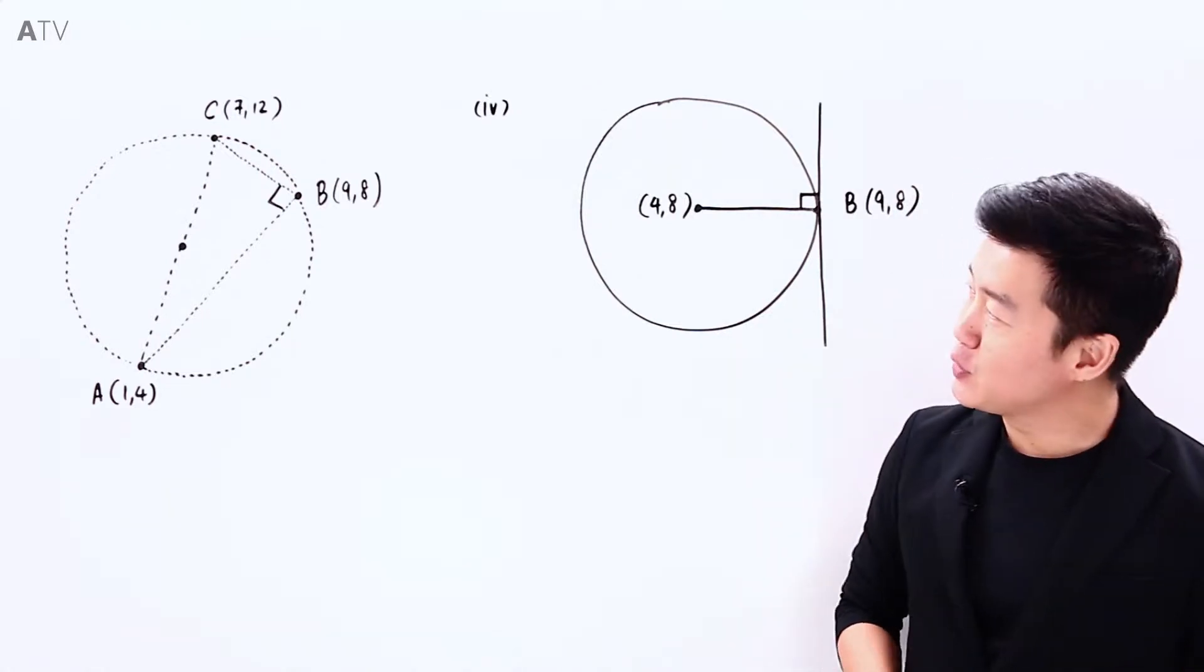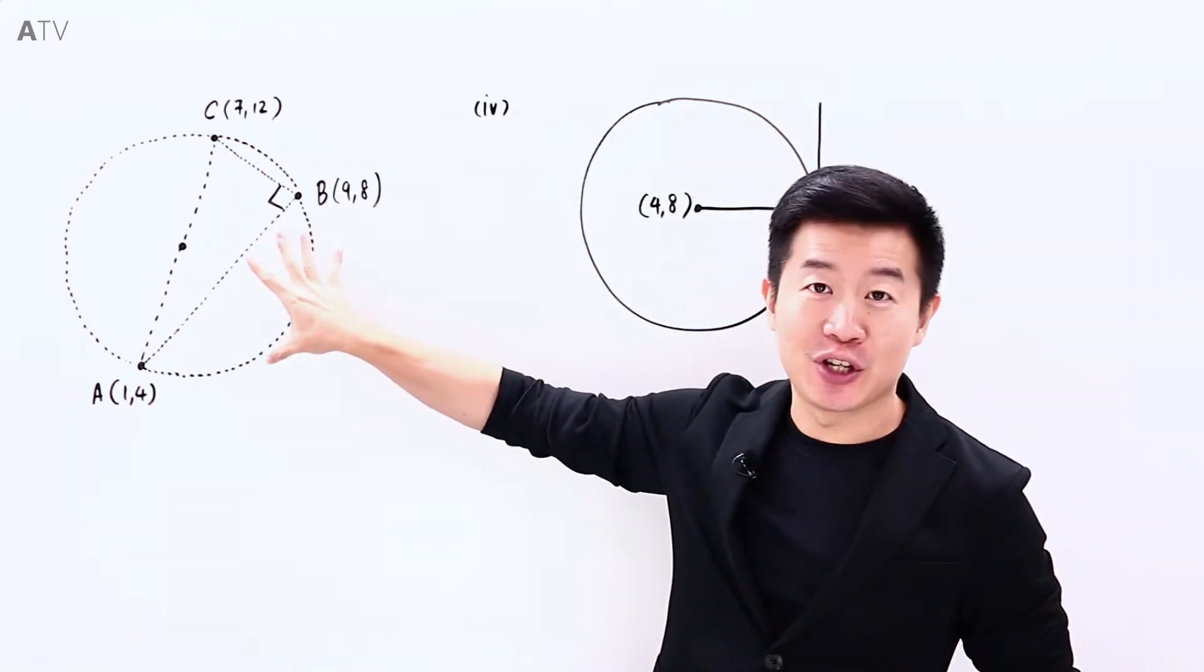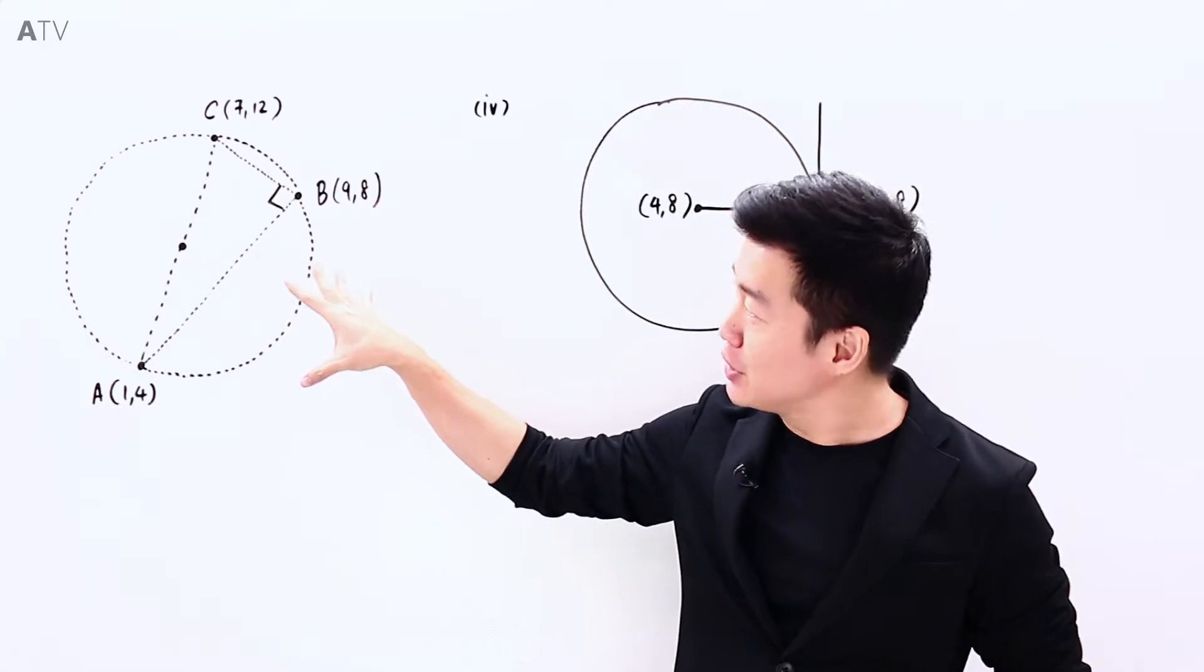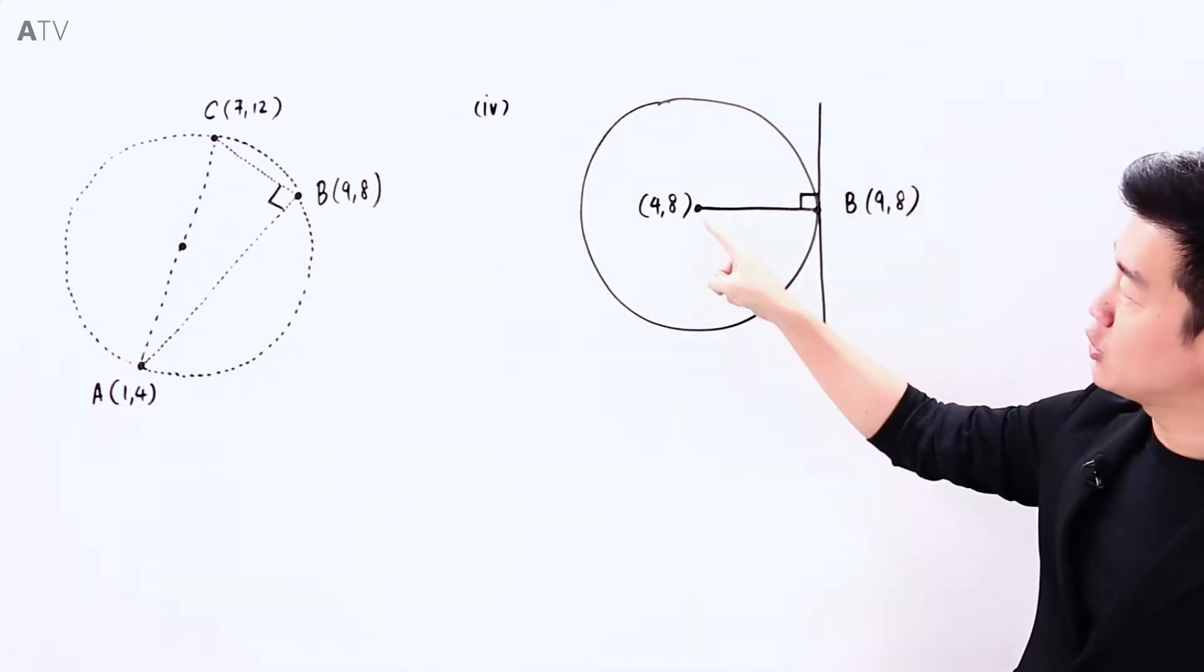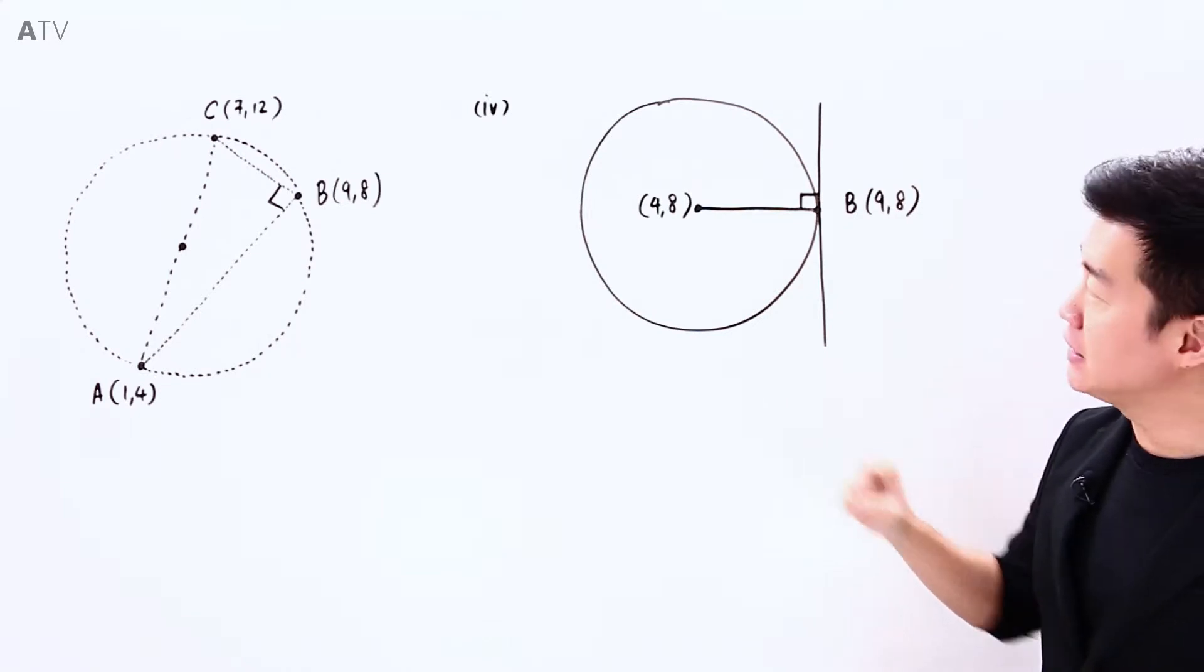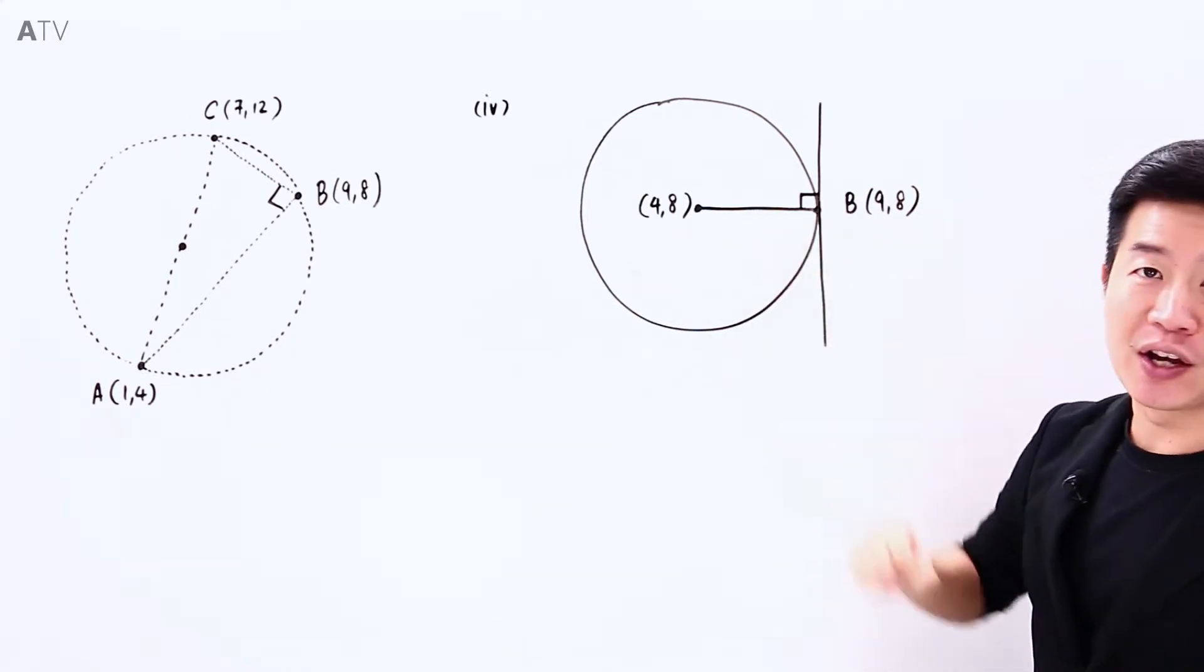From the calculations that we have so far, we know that the original interpretation of the points are incorrect because if I were to just look at the coordinates of the center and the coordinates of B again, they actually share the same Y coordinates.